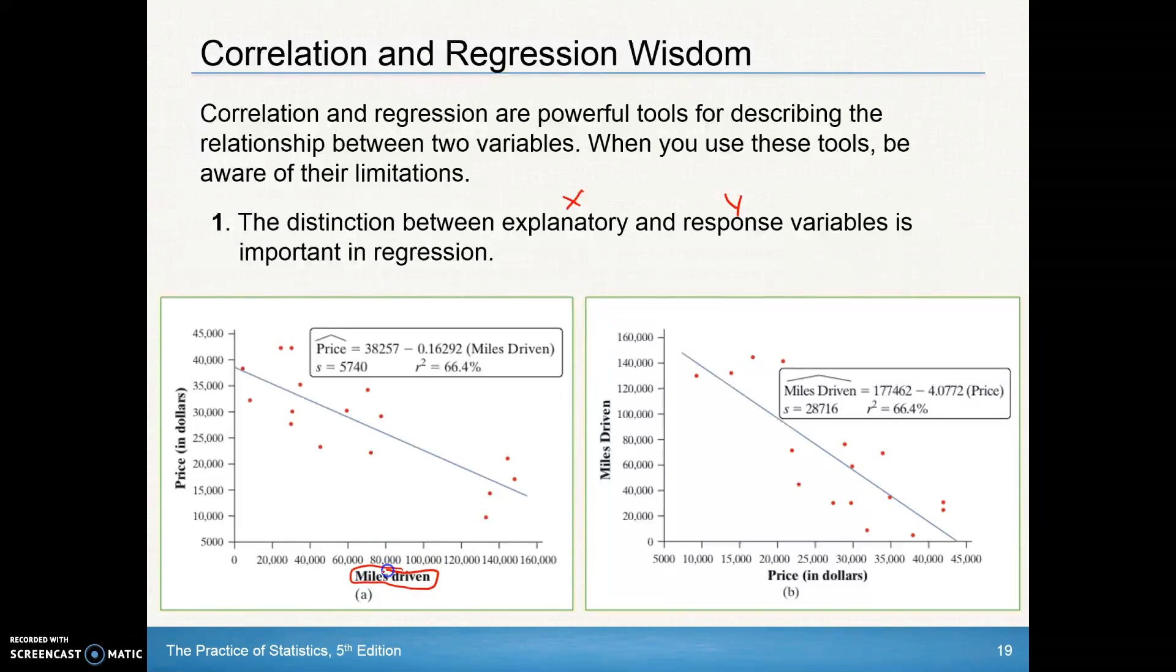Here the explanatory variable is miles driven, but over here it is the response variable and vice versa. So you can see it has a change in number one, our prediction equation. See that they are different. Even the standard deviation of the residuals is different as well. Now the r-squared value, or coefficient of determination, doesn't change because it doesn't change the position the dots away from the line. So that itself would stay the same. But be careful, make sure you got the right explanatory variable on the x value, not mixing them up.